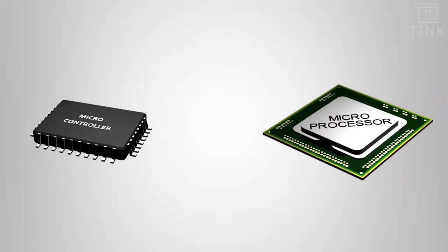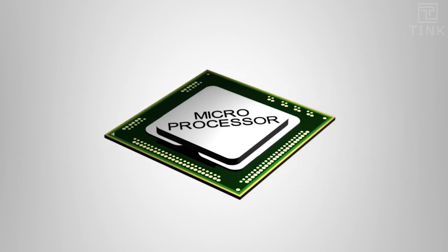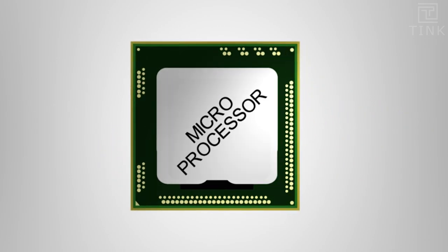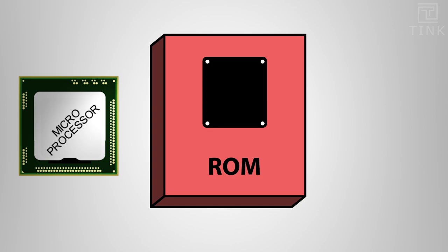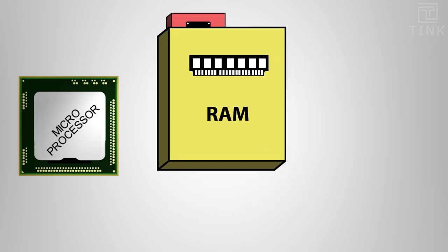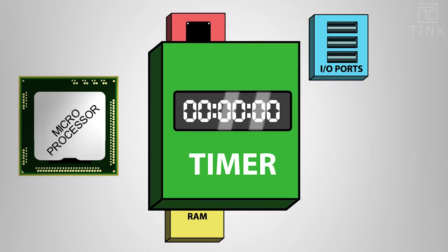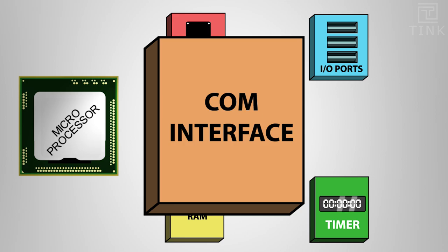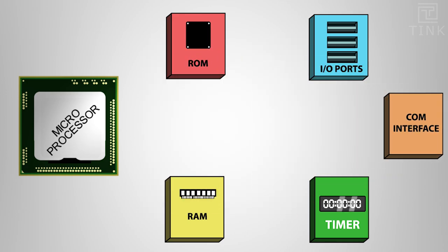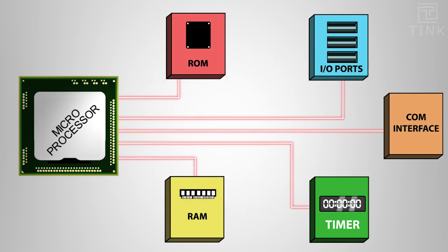Generally, any embedded system will be based on either a microcontroller or a microprocessor. A microprocessor can just process the information. The ROM, RAM, IO ports, communication interfaces, peripherals, timers and more can all be added externally to suit the project needs.